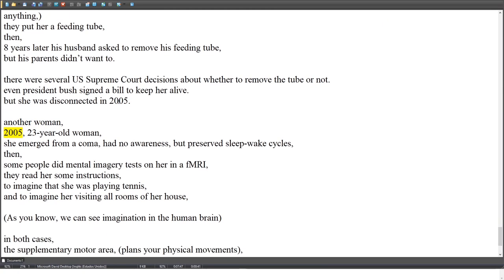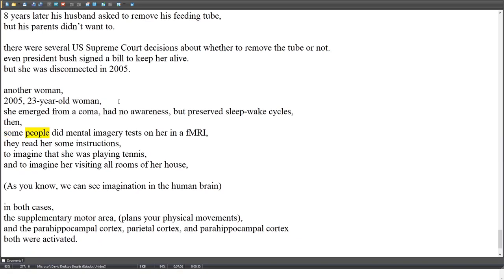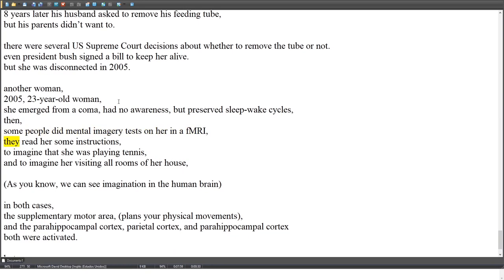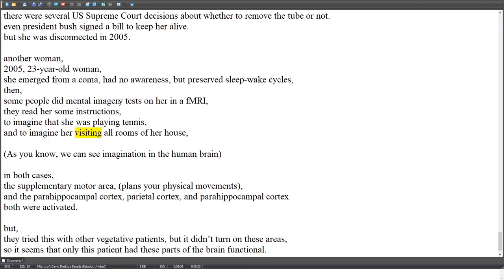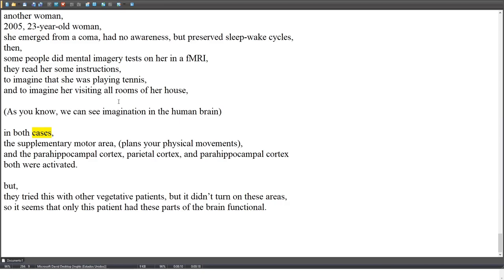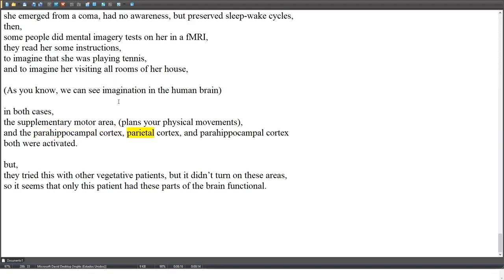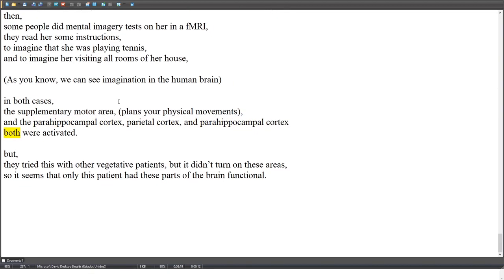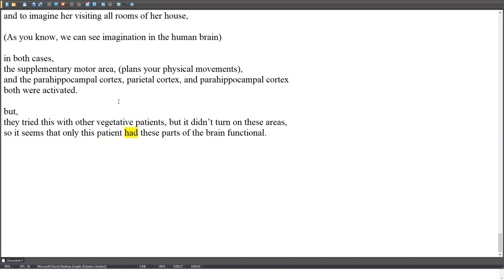A different case: a 23-year-old woman in 2005 emerged from a coma with no awareness but preserved sleep-wake cycles. Researchers performed mental imagery tests using fMRI, instructing her to imagine playing tennis and then to imagine visiting all rooms of her house. We can see imagination in the human brain. In both tasks, the supplementary motor area and the parahippocampal and parietal cortex were activated — the same as in healthy subjects. However, when the same test was tried on other vegetative patients, these areas did not activate, suggesting only this patient had those brain regions functional.